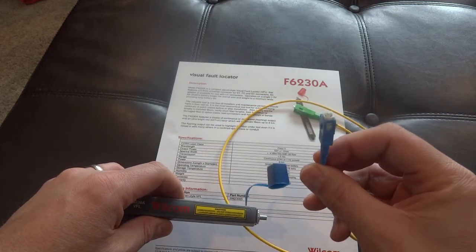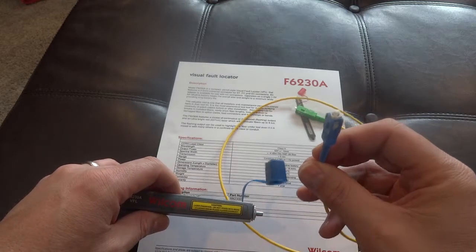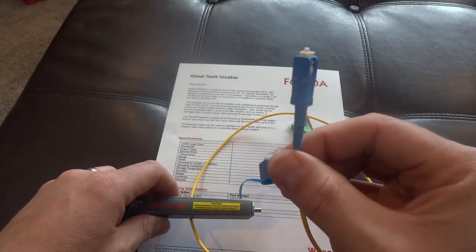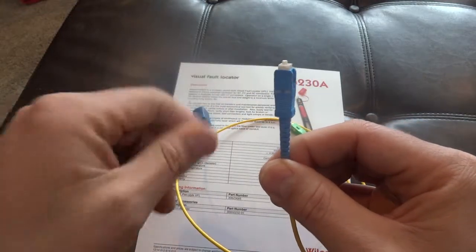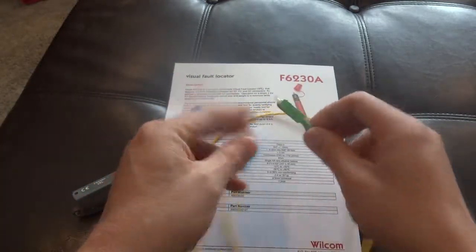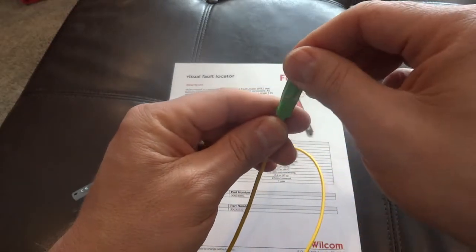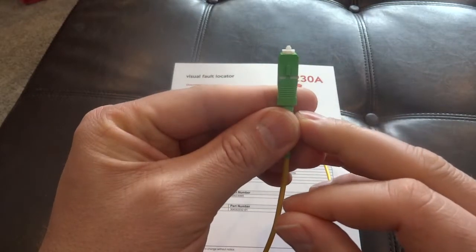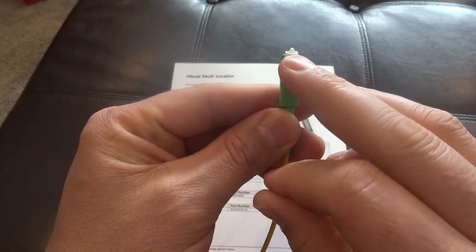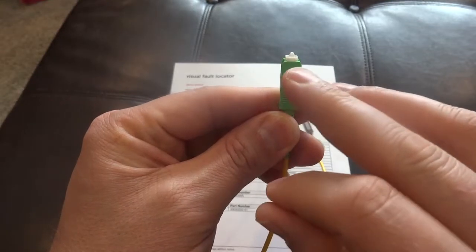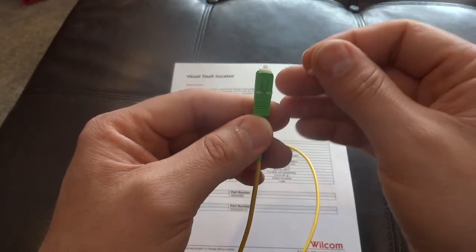This is an SC UPC, which means it does not have an angle on it. If you look at the very end here, it does not have an angle. This is an SC APC, which means it's angle polished. You probably cannot see it in the video, but it has a very small angle—I think it's either seven or nine degrees. It's got a very small angle that gives it less reflection.